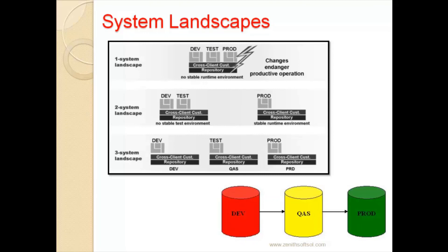In a three-system landscape there is one export and two imports. Data moving out of the Development box is called an export, and data pulled into the Quality and Production boxes is called an import. This overall process is called Transportation.